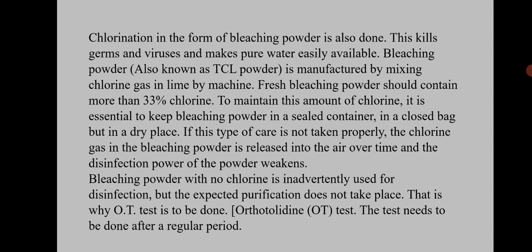Bleaching powder, also known as TCL powder, is manufactured by mixing chlorine gas in lime by machine. Fresh bleaching powder should contain more than 33 percent of chlorine. To maintain this amount of chlorine, it is essential to keep the bleaching powder in a sealed container and in a closed bag in a dry place. If this care is not taken, the chlorine gas in the bleaching powder is released into the air over time and the disinfection power of the powder becomes weak. Bleaching powder with no chlorine is of no use and cannot disinfect the water.